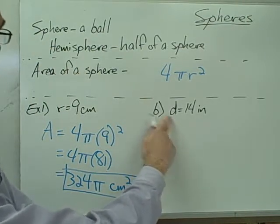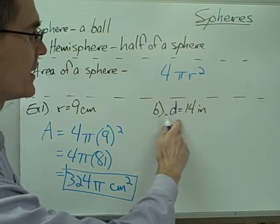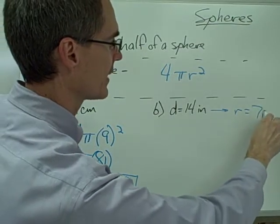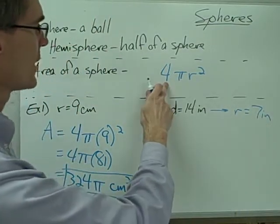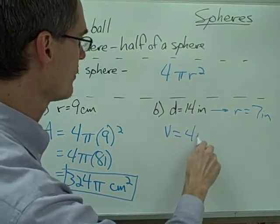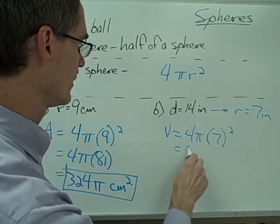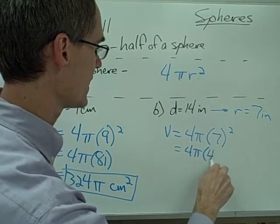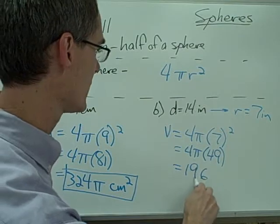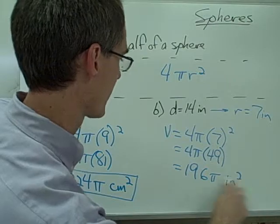Now I want to calculate the area of this sphere, and in this case I'm given the diameter. If my diameter is 14 inches, my radius is going to be half of that. So I use my formula again and just plug in my radius: 4 pi times my radius squared, so that's 4 pi times 49, which is 196 pi, and this is in inches squared.